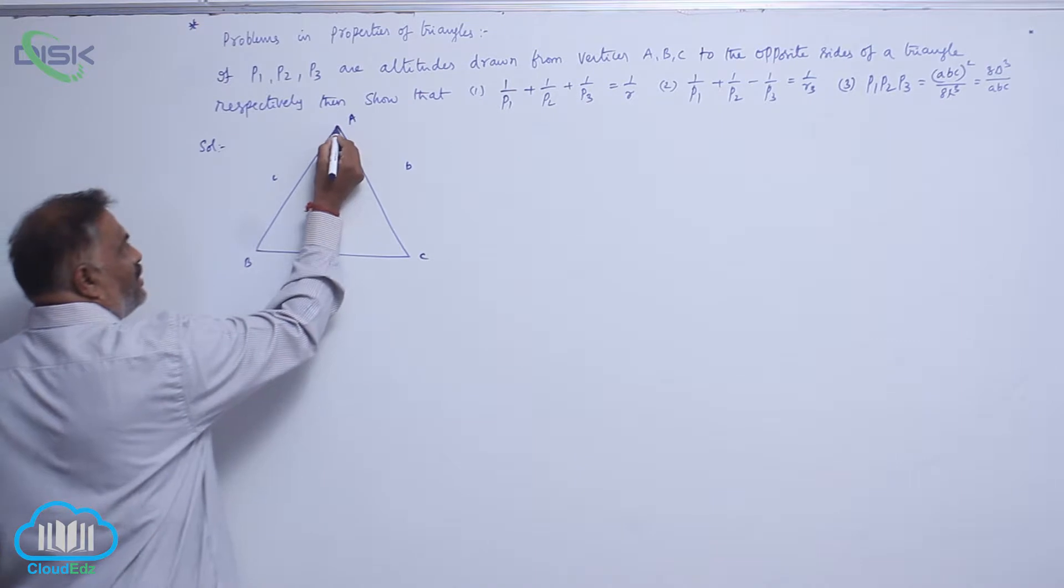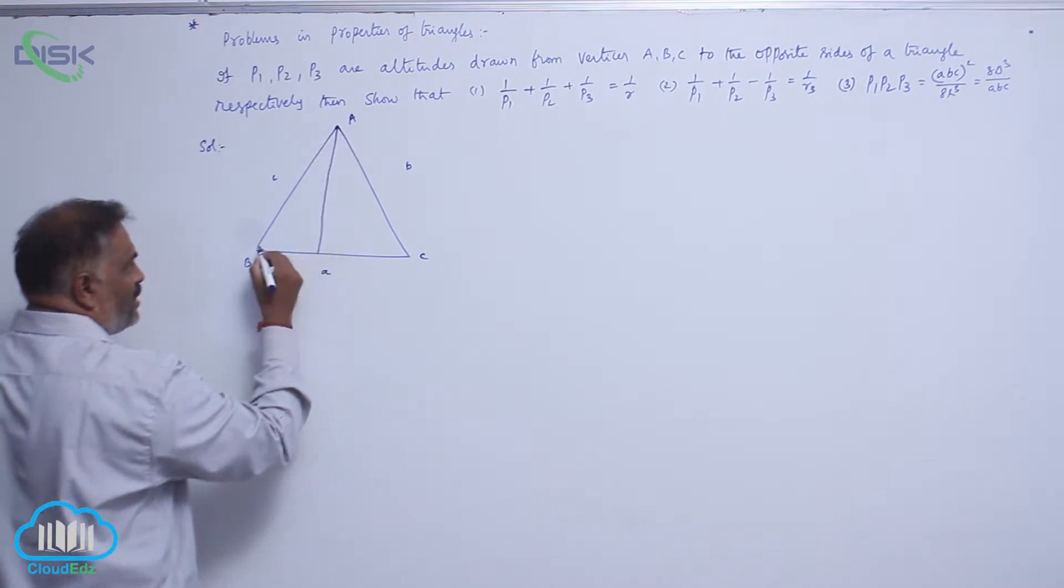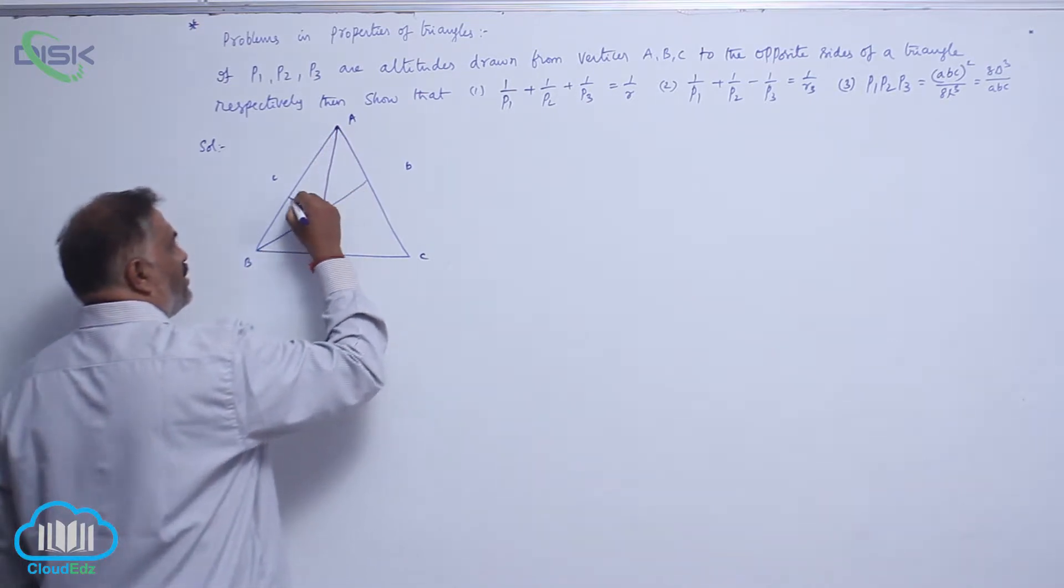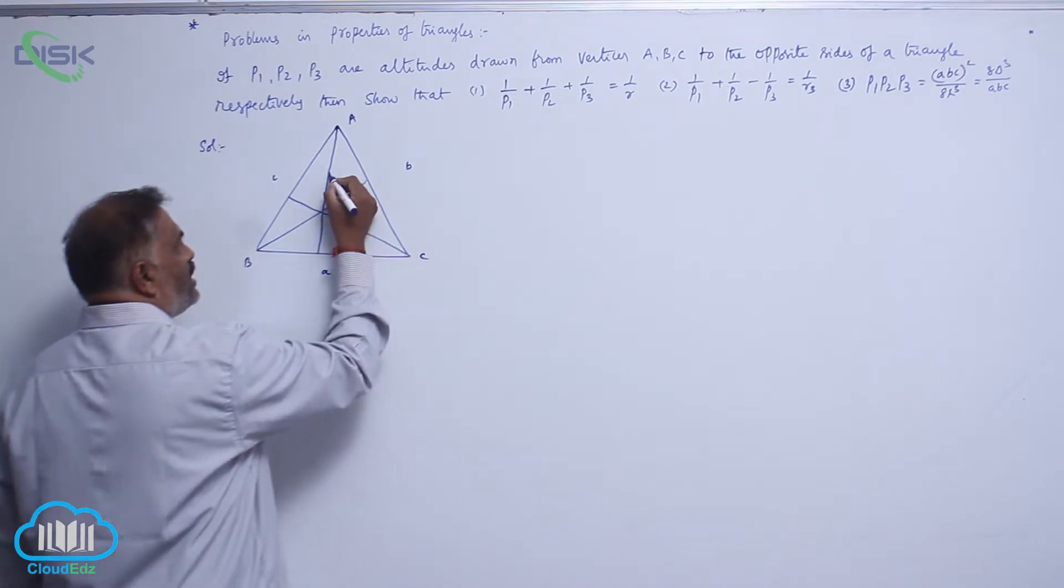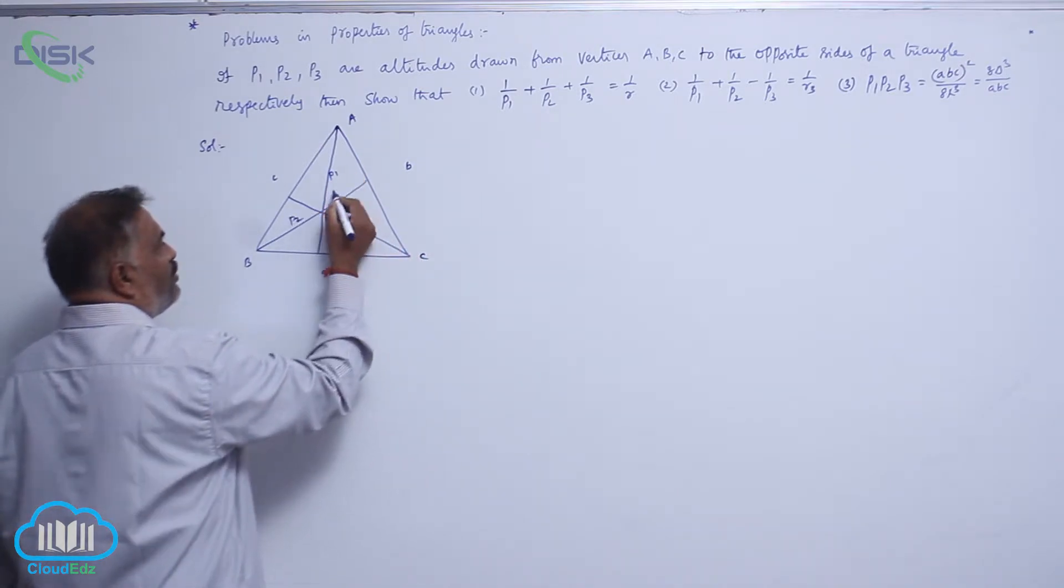Now, drop altitudes like this. We know that this is P1, P2, P3.